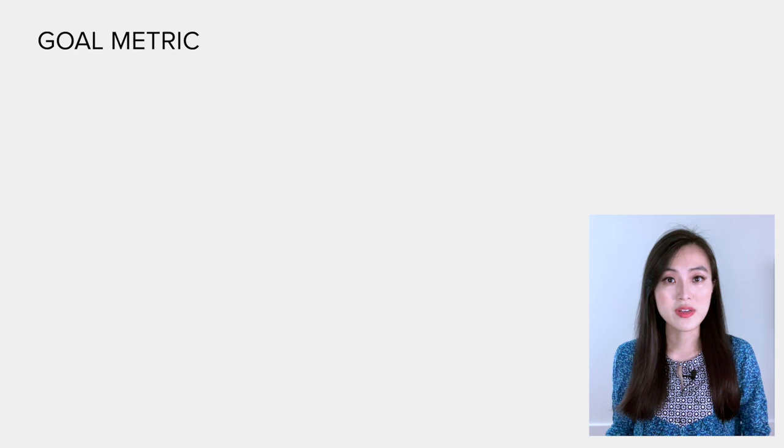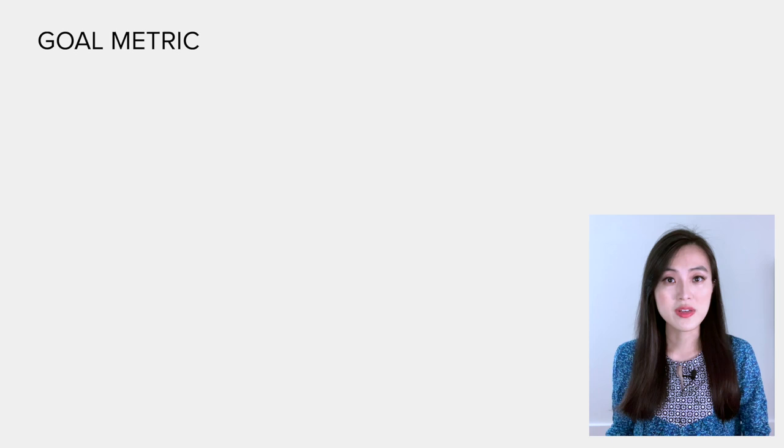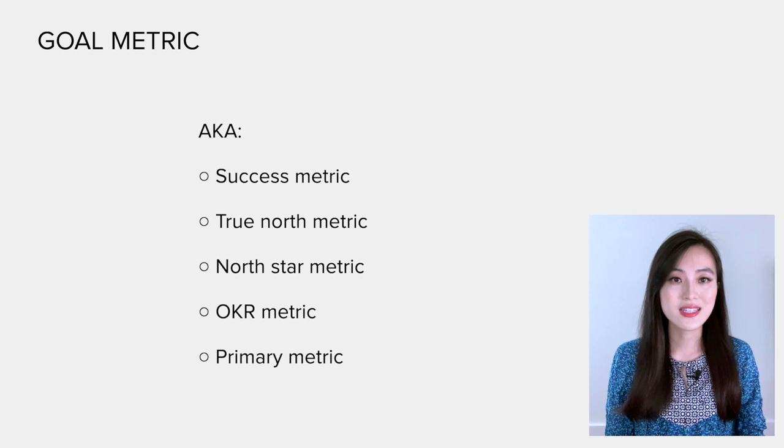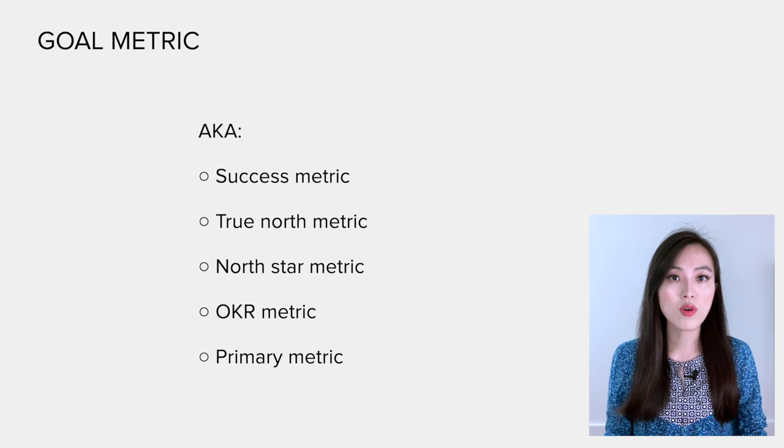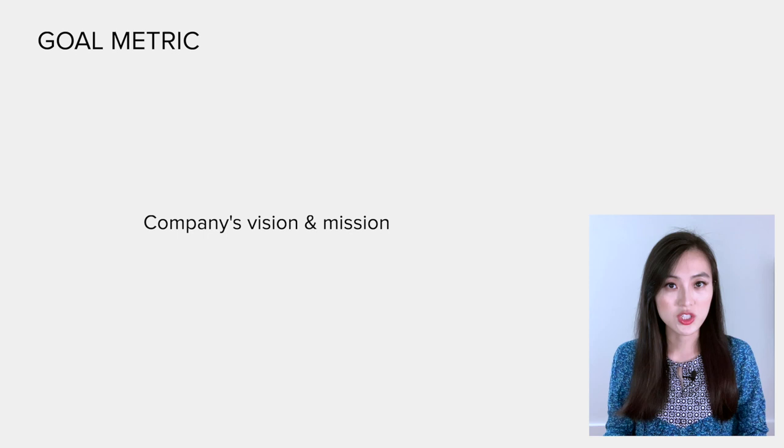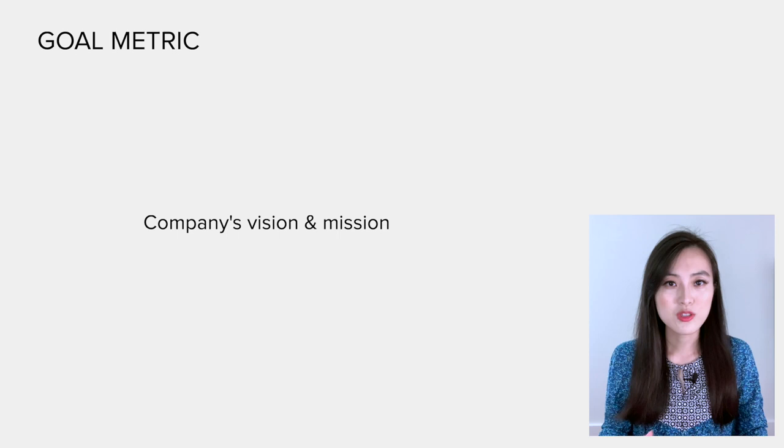Okay, let's get started. There are three kinds of operational metrics that companies use to measure success and progress and to understand areas for improvements. The first kind of metric is a goal metric. It's also known as success metric, true north metric, north star metric, OKR metric, and the primary metric. This kind of metric reflects a company's long-term vision and it always ties to a company's mission.